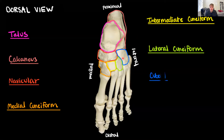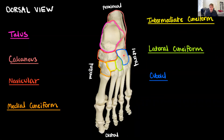Our last bone of the tarsal region is the cuboid, highlighted in blue. The cuboid gets its name from its cube-like shape. A fun fact: pirates would actually use the cuboid to make dice, because it's already very cube-shaped — they'd take the bone, shave it down, and use it. That's going to conclude the bones of the hand and the foot. If you have any questions, leave them in the comments below. Thank you!